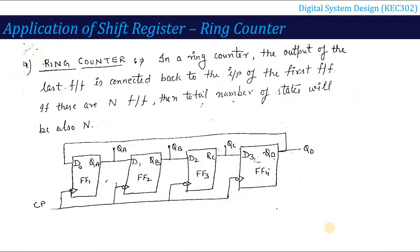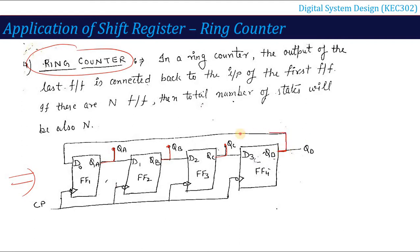The next and most important application is the ring counter. In the ring counter, we use a right-shift register made of D flip-flops, all driven by a common clock pulse. The key change is that the output of the last flip-flop is connected back to the input of the first flip-flop, creating a feedback path. This particular configuration is called a ring counter.